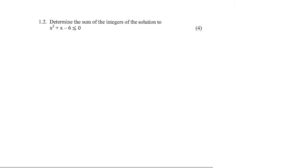With this question, I wouldn't pay too much attention to the determine the sum of the integers. What I would do is just solve the inequality. So the way we solve an inequality is, I'm just going to write this down again. Now what I want you to do is pretend that this is an equal sign, and then just solve it the way you normally would. So if it was an equal sign, you would factorize this as (x+3)(x-2).